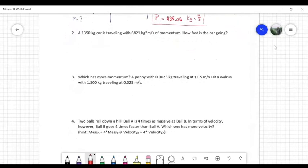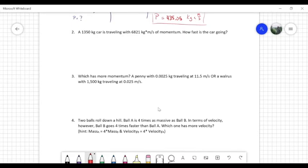Okay, number two. So I'm going to read through this. A car that is 1,350 kilograms is traveling at 6,821 kilometers meters per second of momentum. How fast is the car moving? So number one, list our variables. The first thing here is mass, which is 1,350 kilograms. Then it gives us momentum, little p, which is equal to 6,821 kilograms meters per second. How fast is it going? That is velocity, and that is unknown. That's what the question is asking about.